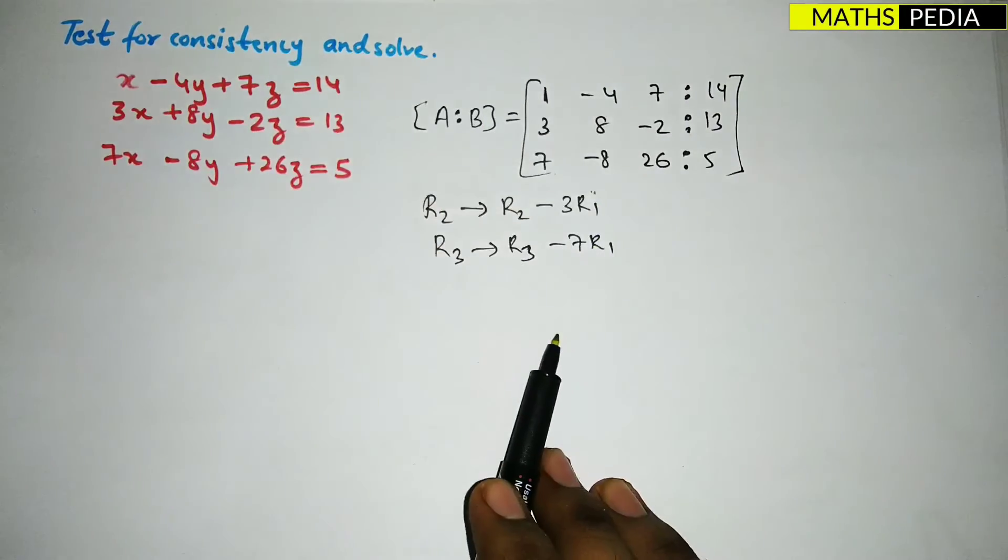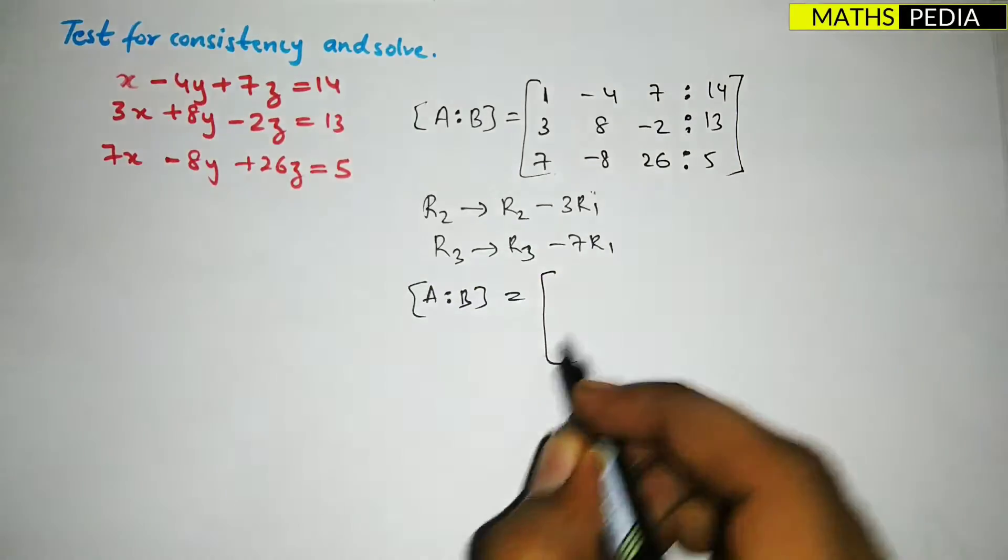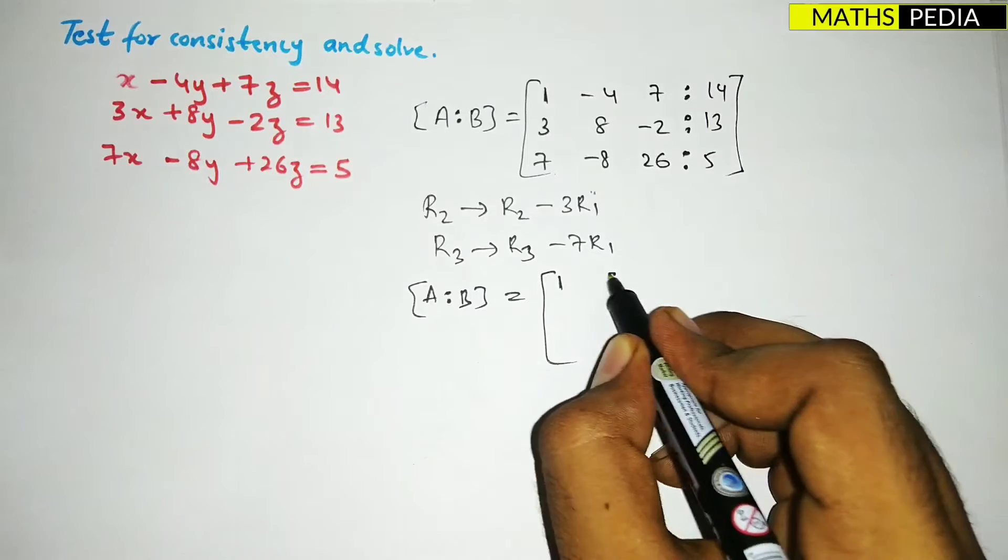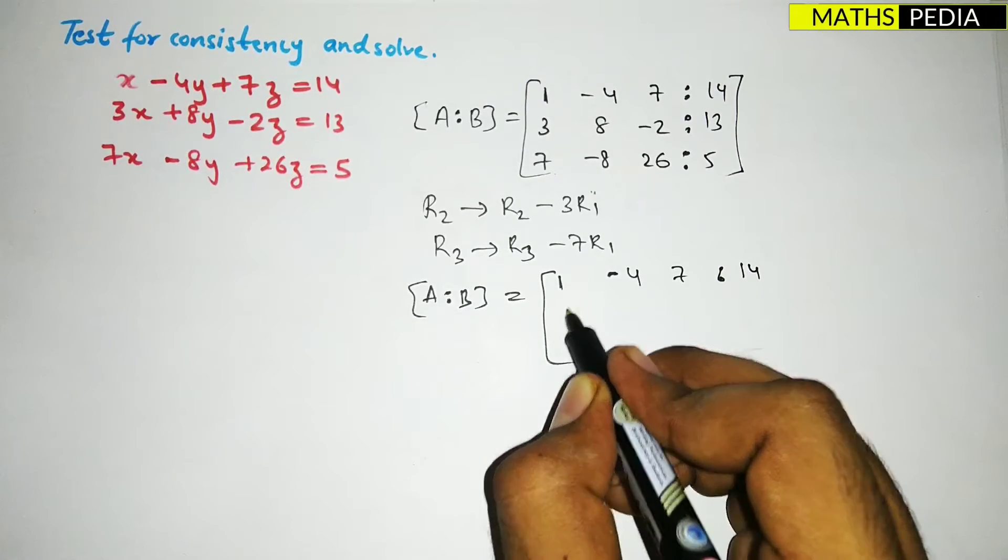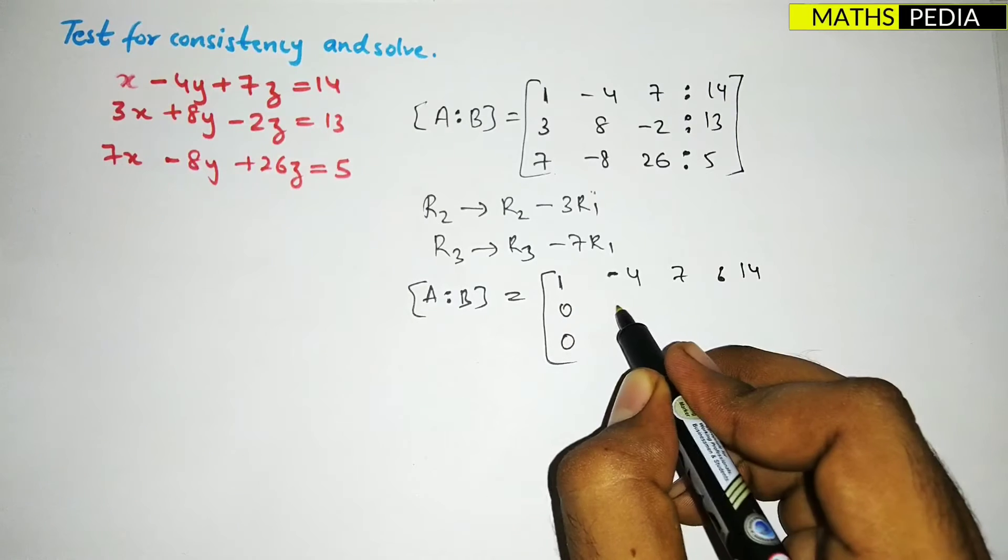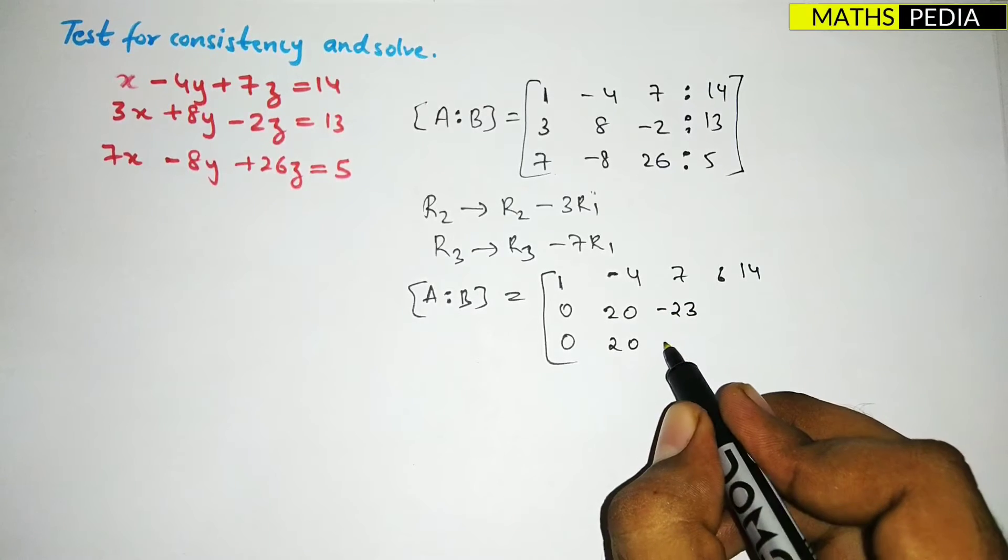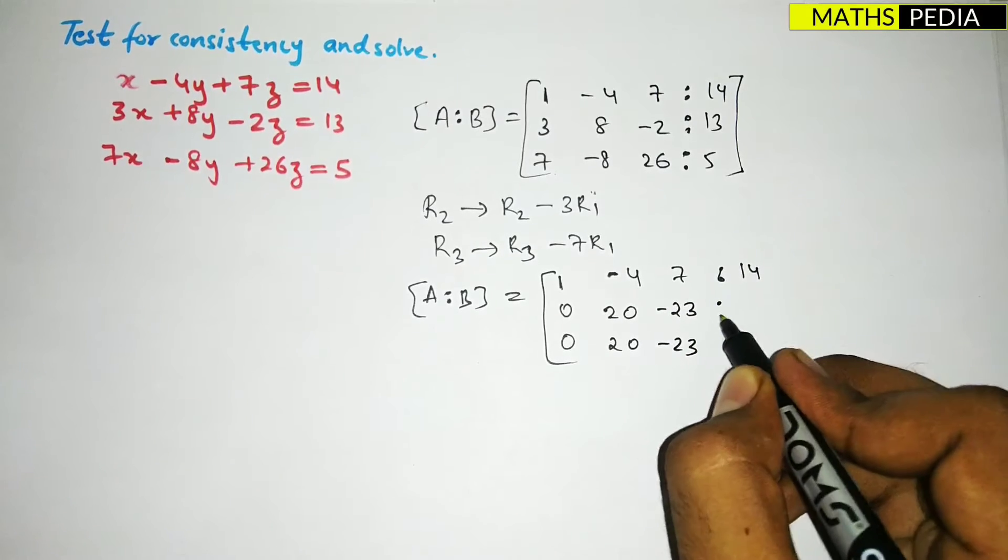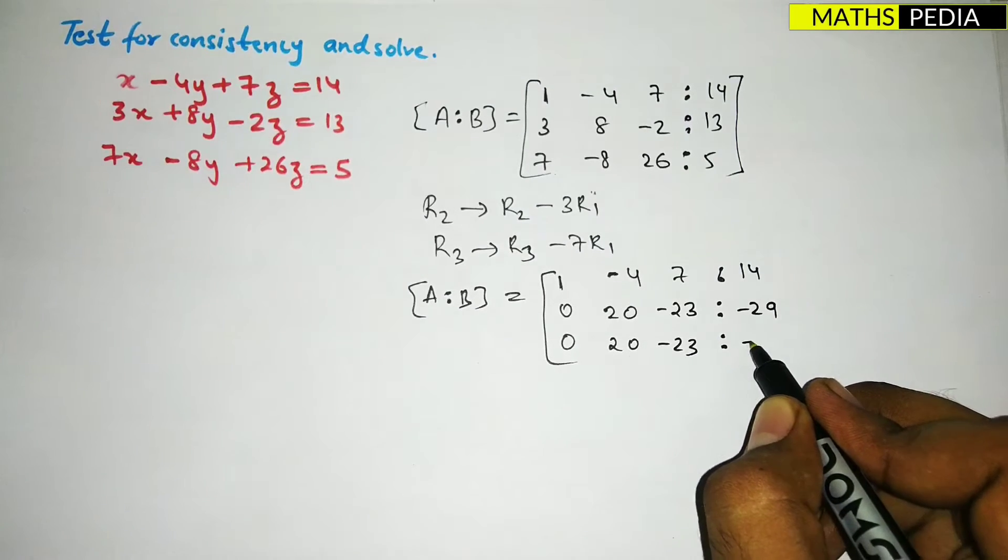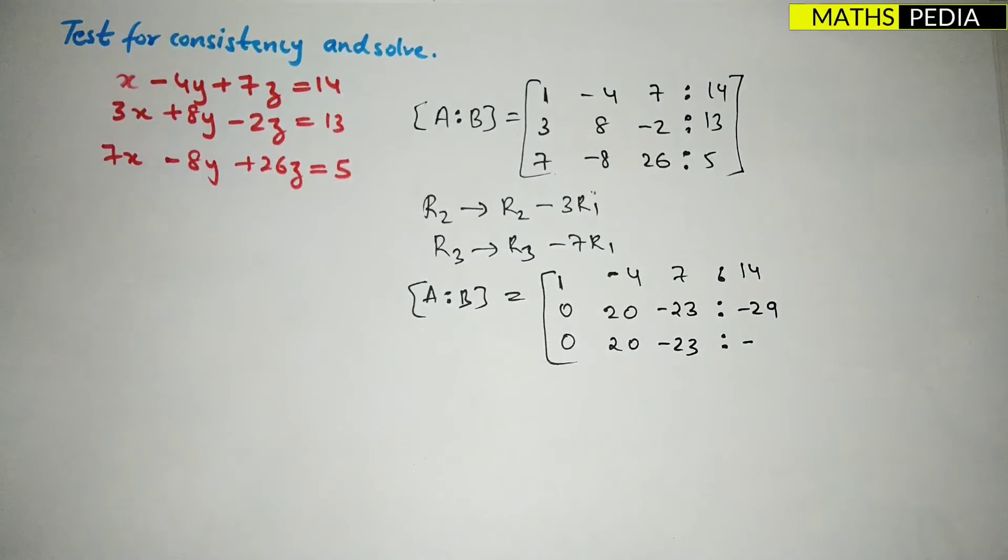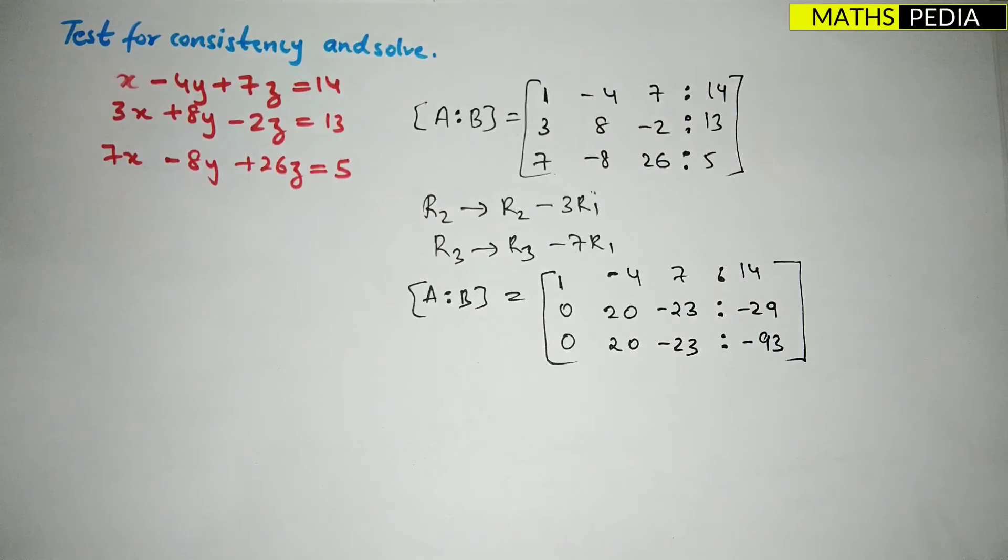Now it is 1, -4, 7, 14. Here it will be 0, then 0, 20, -23, and -29. Here also 0, 20, -23, and -93. You have to carefully solve all these calculations.